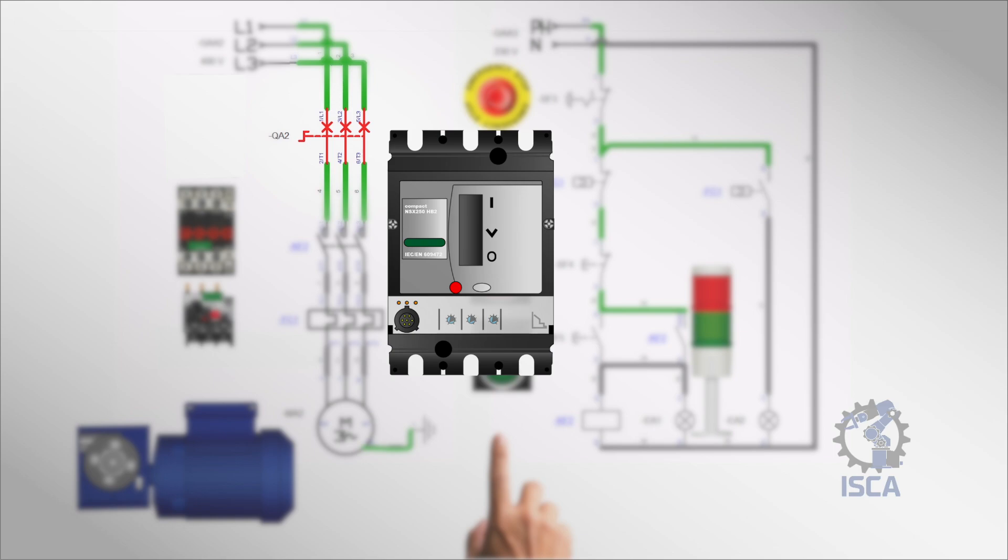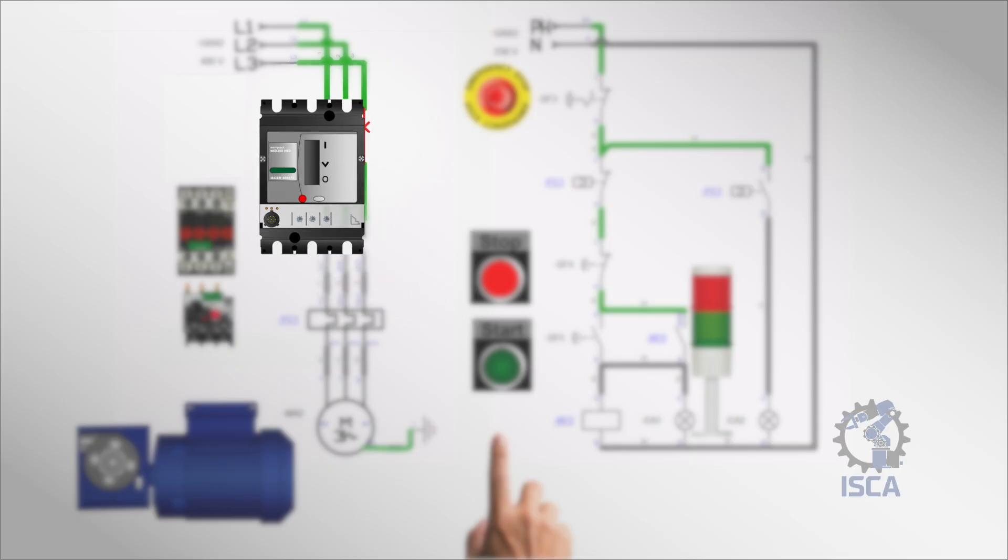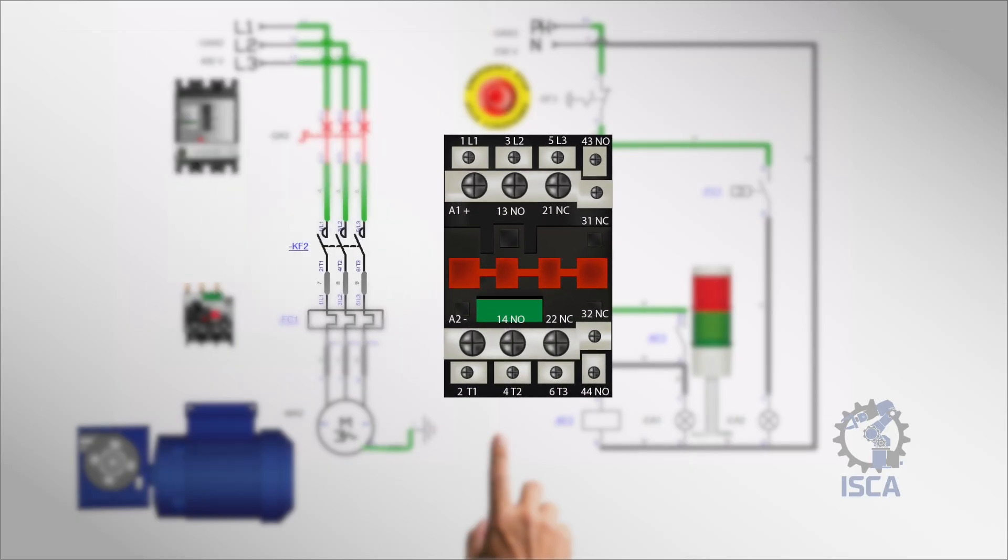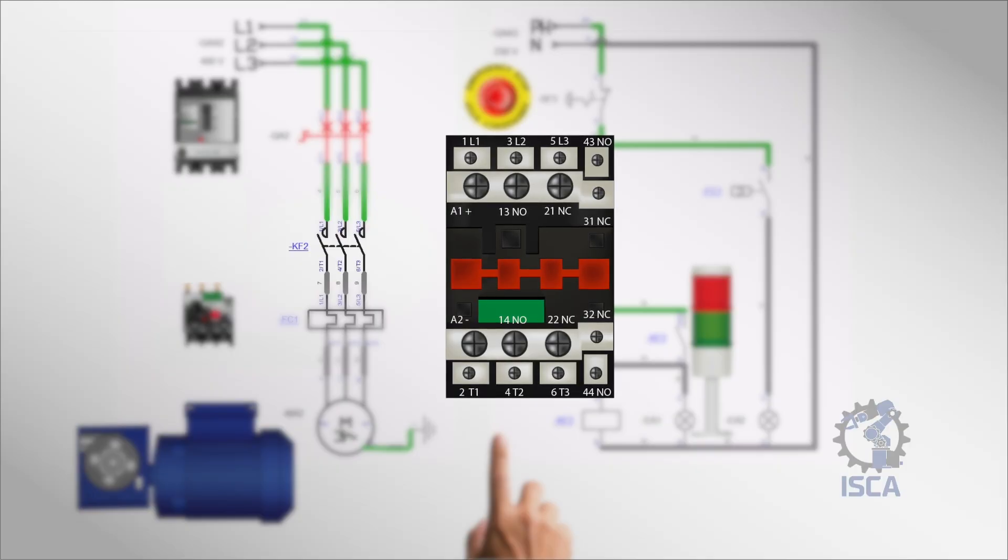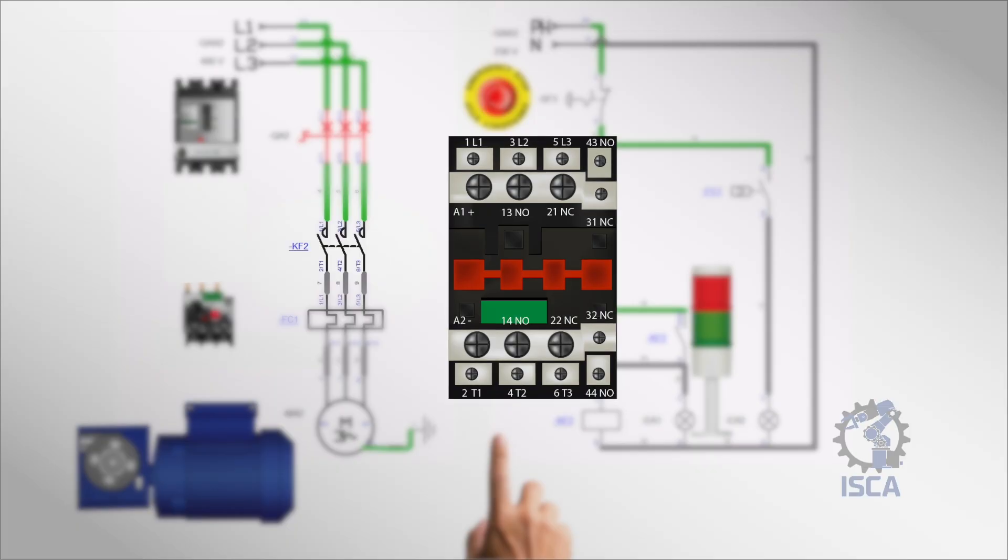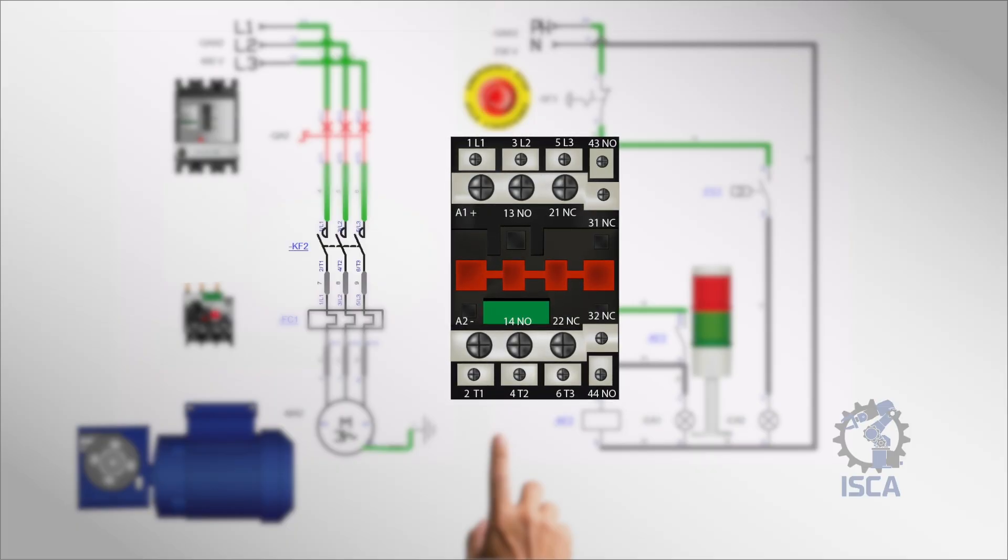Magnetic contactor: this is an electrically operated switch used for controlling power circuits. When activated, it uses an electromagnet to close or open the main power contacts. In a DOL starter, the magnetic contactor is responsible for connecting and disconnecting the motor from the power supply. It can handle frequent switching of high current loads, making it ideal for motor control applications.